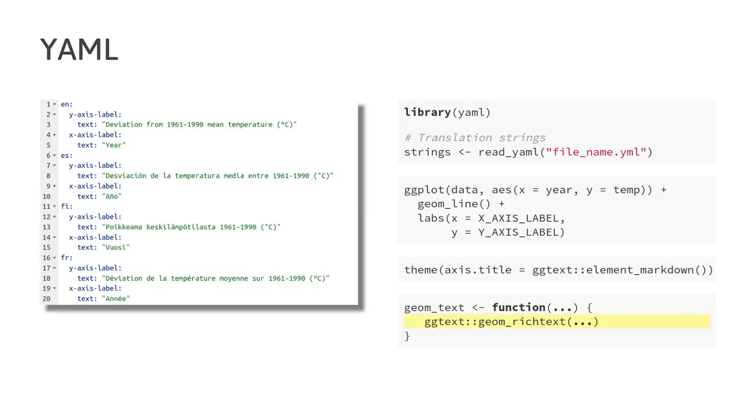This worked well for labels that are axis titles. However, we also have many labels that require translation that are placed on the plot with geom_label or geom_text. In order to cater for this, what I did was again use the ggtext package and create a function that corresponds with the original ggplot to override it. So, for example, instead of geom_text we use geom_rich_text which again enables translators to be able to put simple markdown into their strings that's then catered for in the final output.